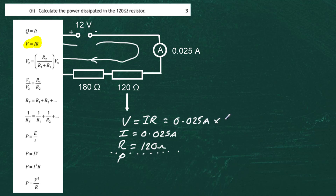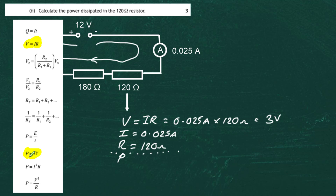Doing that in the calculator, we get 3 volts. So now we know the potential difference across the resistor is 3 volts, the current passing through it is 0.025 amps, and the resistance is 120 ohms. Now we can find the power dissipated. Looking at the data sheet, we can see that power equals IV — if you know the current through the component and the potential difference across it, you can find the power dissipated.